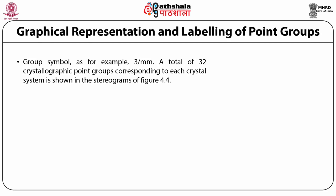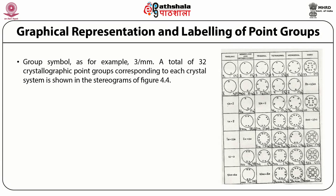A total of 32 crystallographic point groups corresponding to each crystal system is shown in the stereograms of Figure 4.4. It is divided into 6 columns: one refers to the triclinic system, another to monoclinic and orthorhombic, the third to the trigonal system, tetragonal system, hexagonal system, and cubic system. How their point groups are shown in various crystal systems is also depicted in Figure 4.4.